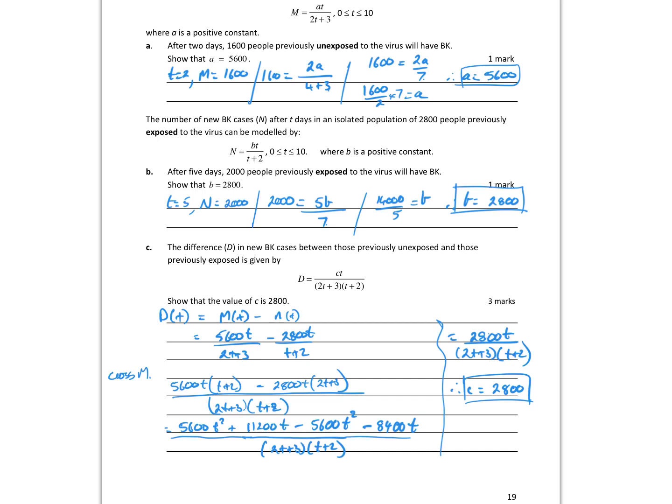Final question: a viral infection that causes flu-like symptoms — a virus that is contagious and can spread from person to person. The number of new BK cases after T days is given by a function. After two days, 1600 people previously unexposed to the virus will have BK. Show that A equals 5600: substitute T equal to 2 and M equal to 1600, rearrange and solve to show 5600. For previously-exposed people, they've got immunity, and the formula is BT over (T + 2), between 0 and 10. After 5 days, 2000 previously exposed people will have BK — same process, T equals 5.